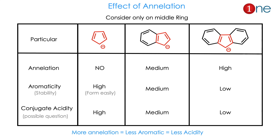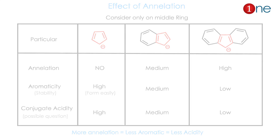So if you look at the order of aromaticity, it keeps on reducing due to the annulation effect. But if you look at the acidity — which is conjugate acidity — acidity is high for the normal cyclopentadienyl anion. Due to sharing, it becomes less acidic and less aromatic, and it keeps on decreasing with more annulation. So the concept here is: more annulation means less aromatic, and lesser the acidity.